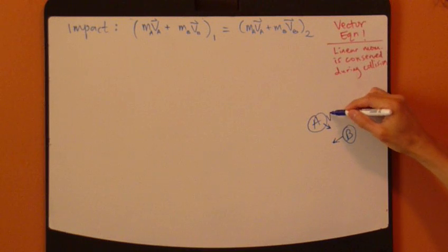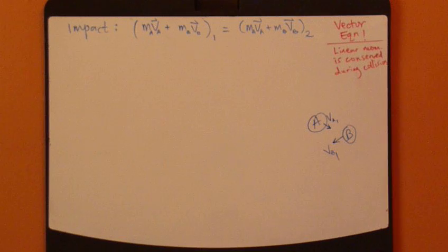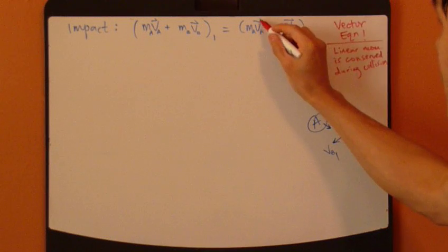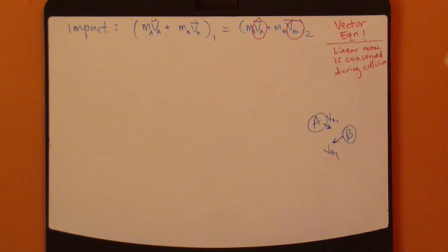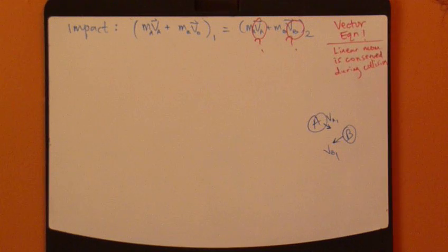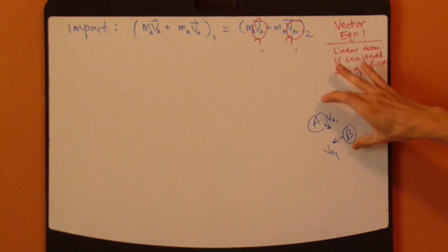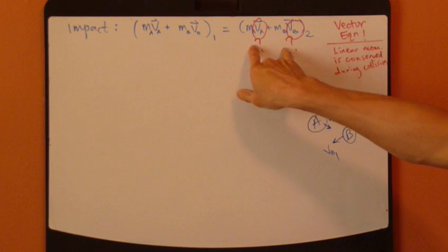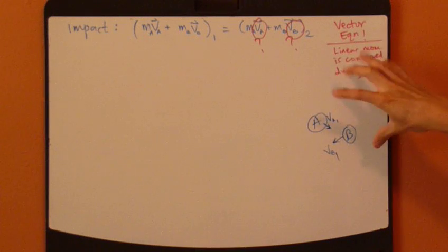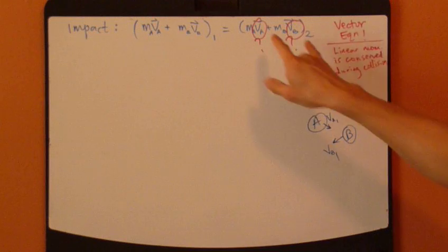Now, the velocity, vA before and vB before, they're usually known. The unknown are usually the velocity after impact. So we're interested in finding the direction and the magnitude of velocity of these two particles just after impact. So two unknowns.